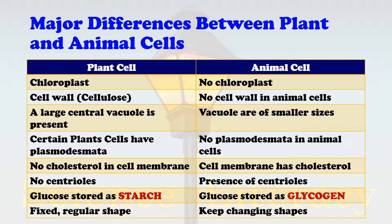Additionally, some plant cells have plasmodesmata, while animal cells do not. Plant cell membranes contain no cholesterol, whereas animal cell membranes do contain cholesterol. Plant cells have no centrioles, while animal cells have centrioles. Plant cells store glucose as starch, whereas animal cells store excess glucose as glycogen. Plant cells are mostly fixed with a regular shape, while animal cells have a fluid structure and constantly change shape.